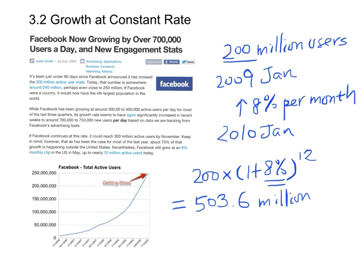As you can see, this is quite a great increase — from 200 million to 500 million. However, this eight percent, as you may know, is just an assumption. In real life, the actual rate varies from month to month, but for this model we treat it as constant.